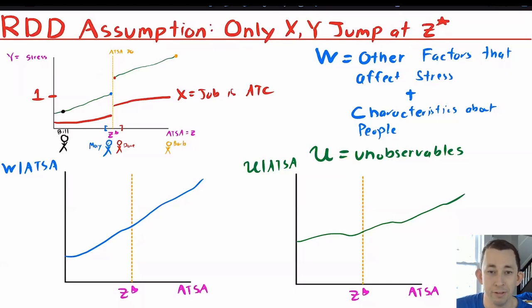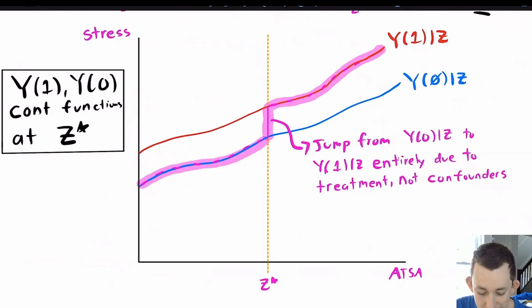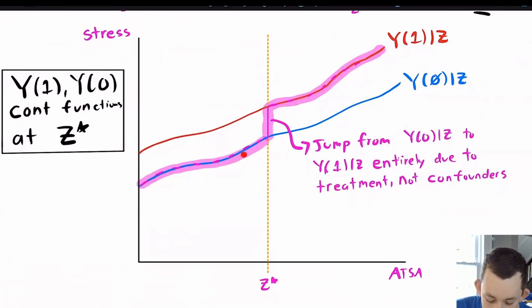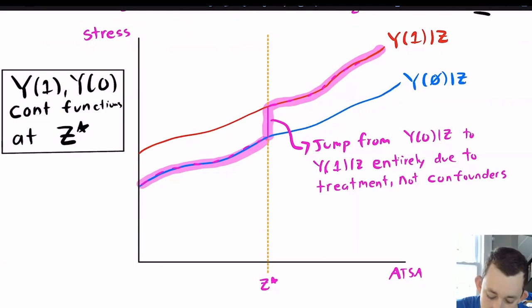If controls are not jumping at Z-star, it makes sense to attribute all the jump in Y to the effect of becoming an air traffic controller. Formally, assuming observables and unobservables are continuous at Z-star tells us that Y1 given Z and Y0 given Z are both continuous at Z-star — that is our main assumption. In a sharp RD, to the left of the threshold you observe Y0, and right at the threshold you jump to Y1. The red line to the left of the threshold is the counterfactual — what your stress would be as an air traffic controller even if you failed — and the green line to the right is the counterfactual of not having taken the job.